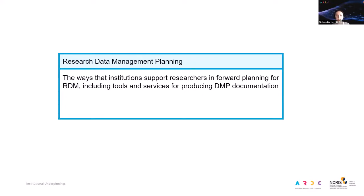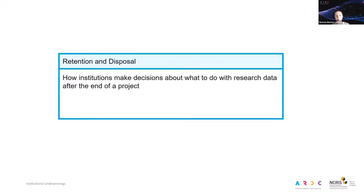Research data management planning looks at the ways universities can support researchers in their forward planning of RDM for their projects. This includes formal documentation such as DMPs, but also how else universities can support forward planning processes and how that can support good research data management. Retention and disposal is quite an important focus for many universities — it looks at how institutions make decisions about what to do with research data after a project is over, and is a particularly interesting challenge as we look at storing increasing amounts of data and what we do with that storage burden long term.